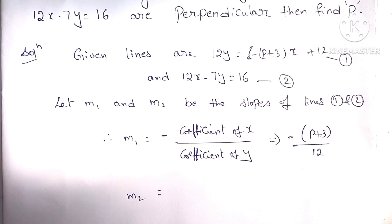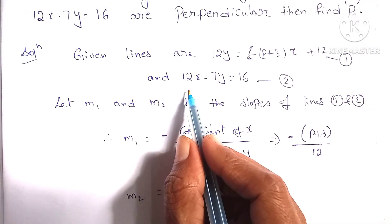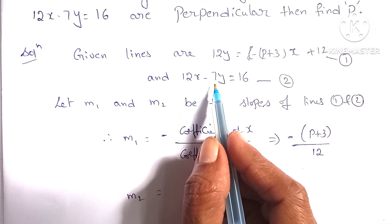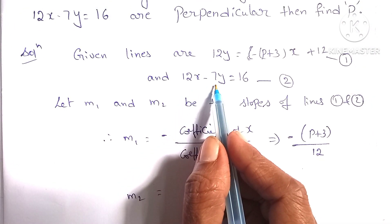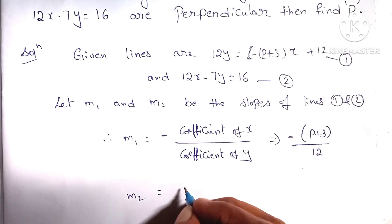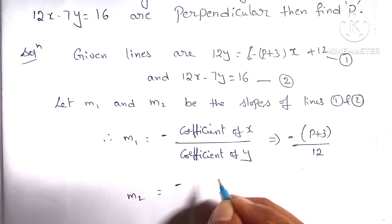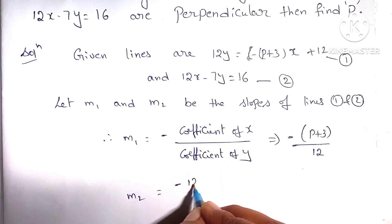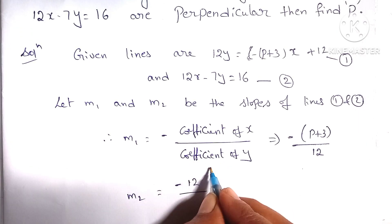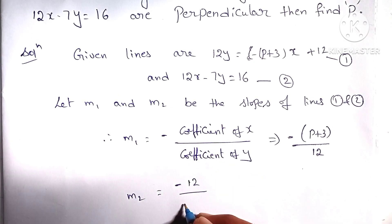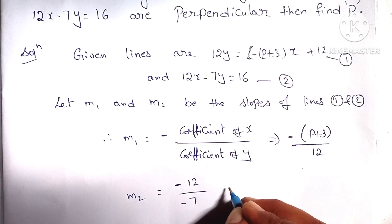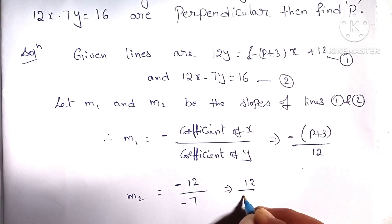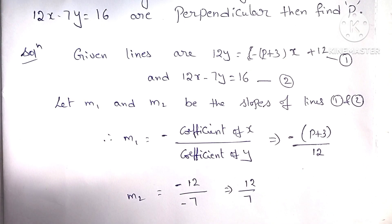For m2, here x coefficient is 12 and y coefficient is minus 7, so minus x coefficient 12 by y coefficient minus 7, which is equal to 12 by 7.